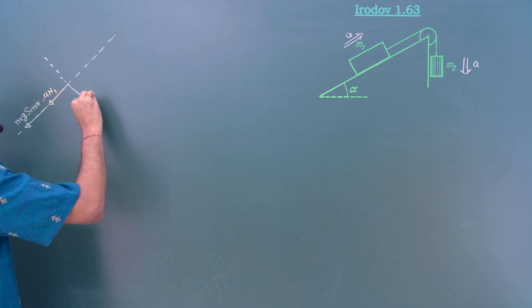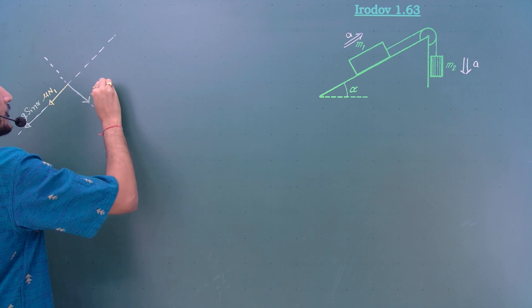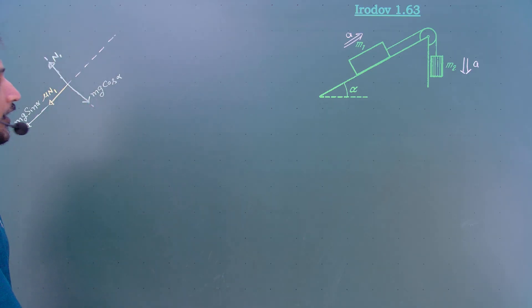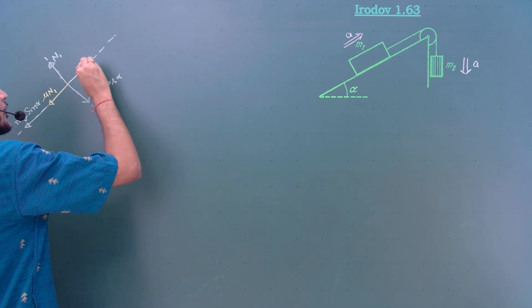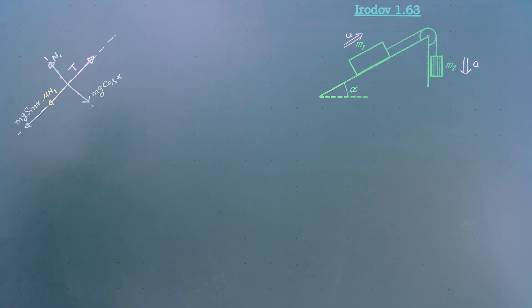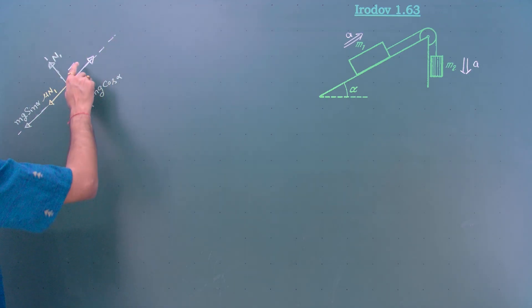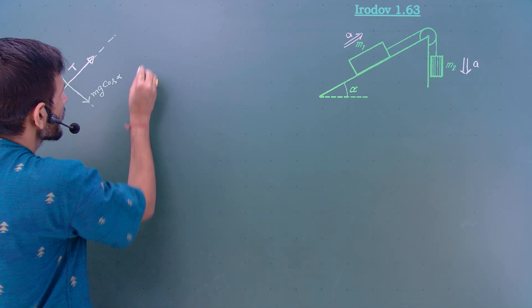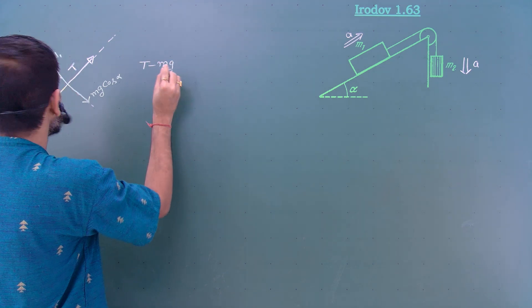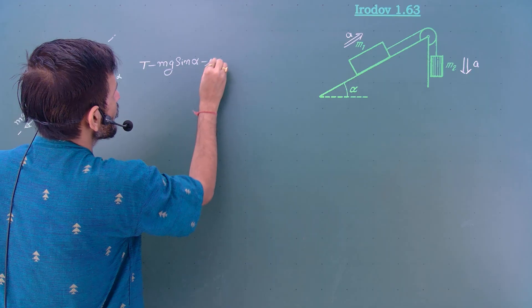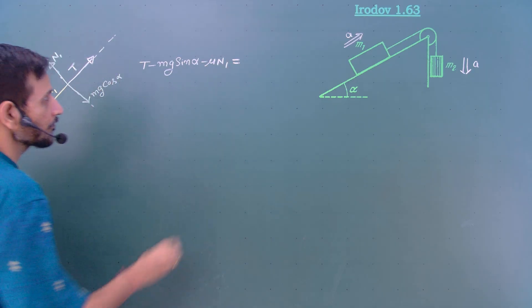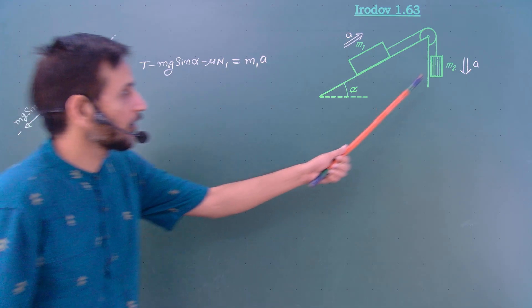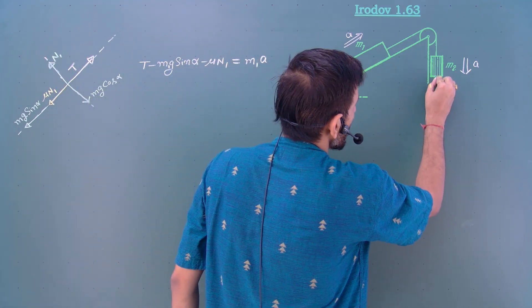The component of m1g perpendicular to the inclined plane is m1g cos alpha, and the normal reaction acts perpendicular to the plane. There is also a tension force T on the block along the plane. Since the block is moving up the plane, T must be greater than the opposing forces. Newton's second law gives: T minus m1g sin alpha minus mu times n1 equals m1 times a.